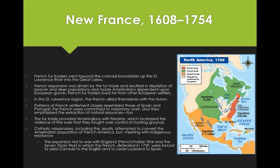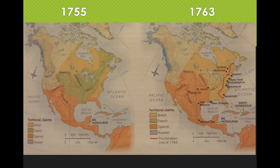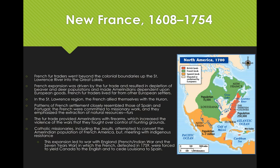As a result, fur traders would marry Ameri-Indians and create bi-ethnic children. But when they went back to France, they would leave this family behind, intending to eventually return. This is similar to what was happening in the Indian Ocean system where merchants would have one to three wives in different locations. In the St. Lawrence region, the French allied with the Huron, who were devastated by diseases from Europe, especially smallpox. Fur trading exhausted traditional hunting grounds, and settlers moved to the Quebec area for farmland.